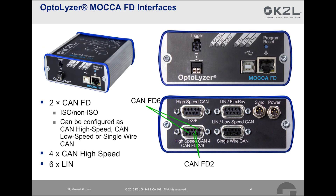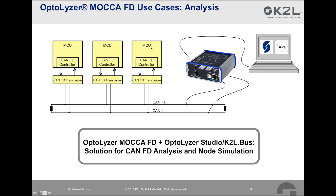The Optalyzer Mokka-FD is equipped with 6 LIN interfaces and 6 CAN interfaces. Two of these interfaces can be configured as CAN-FD, CAN high speed, CAN low speed or single wire CAN. In terms of CAN-FD, ISO and non-ISO CRC calculation is supported. The accuracy of the CAN-FD timestamps is below 1 microsecond. The connection to the PC is implemented with USB 2. Additionally, the Mokka-FD has a trigger interface as well as a relay in place.